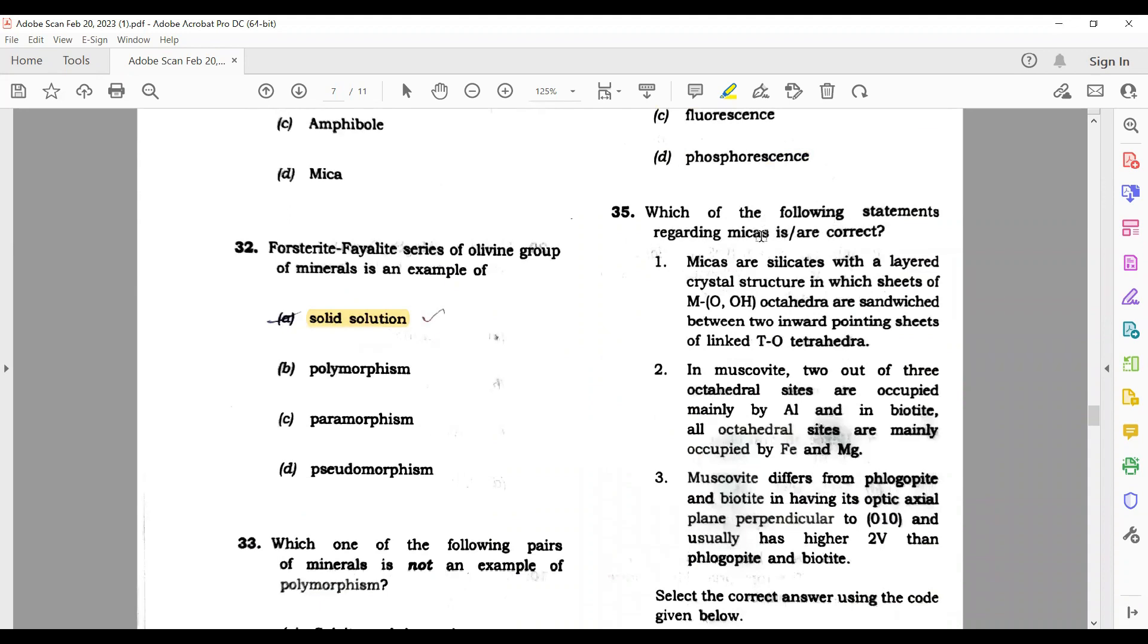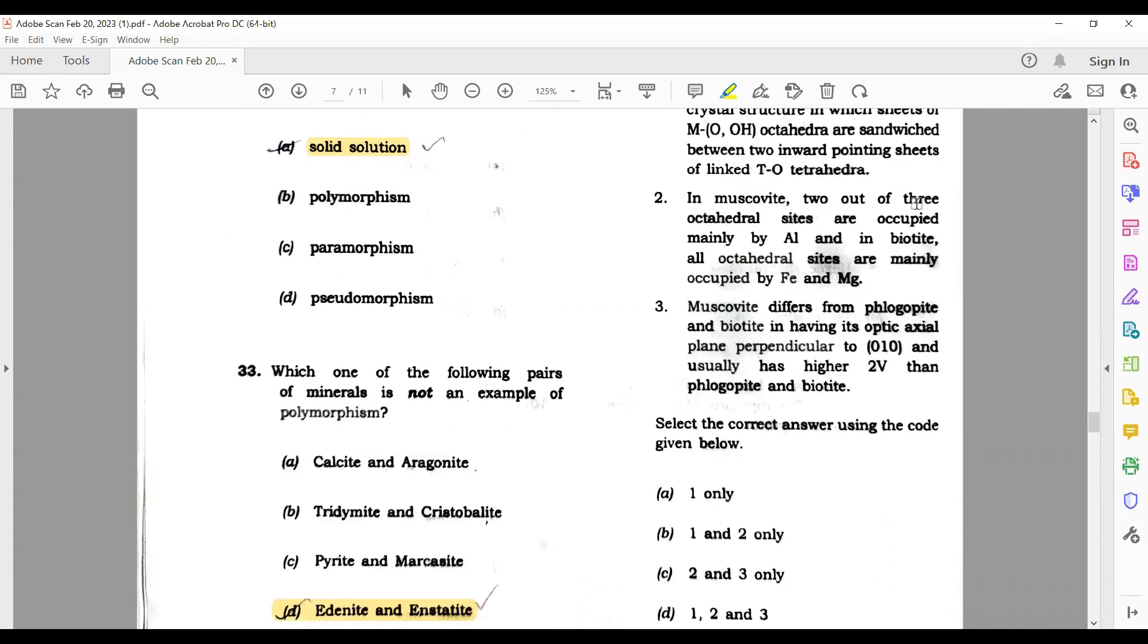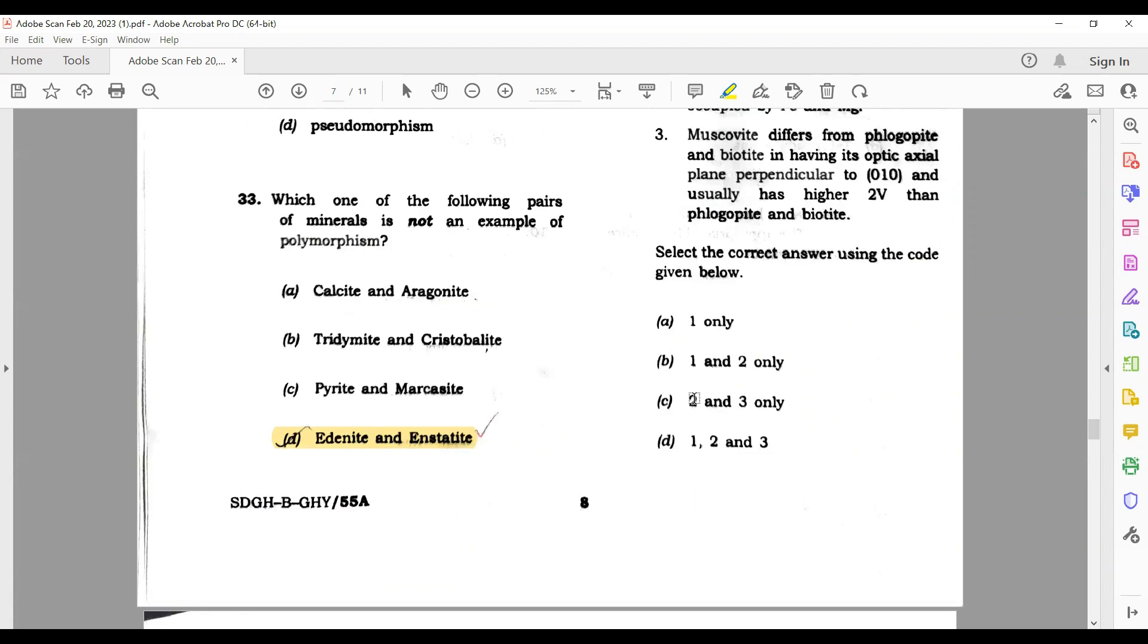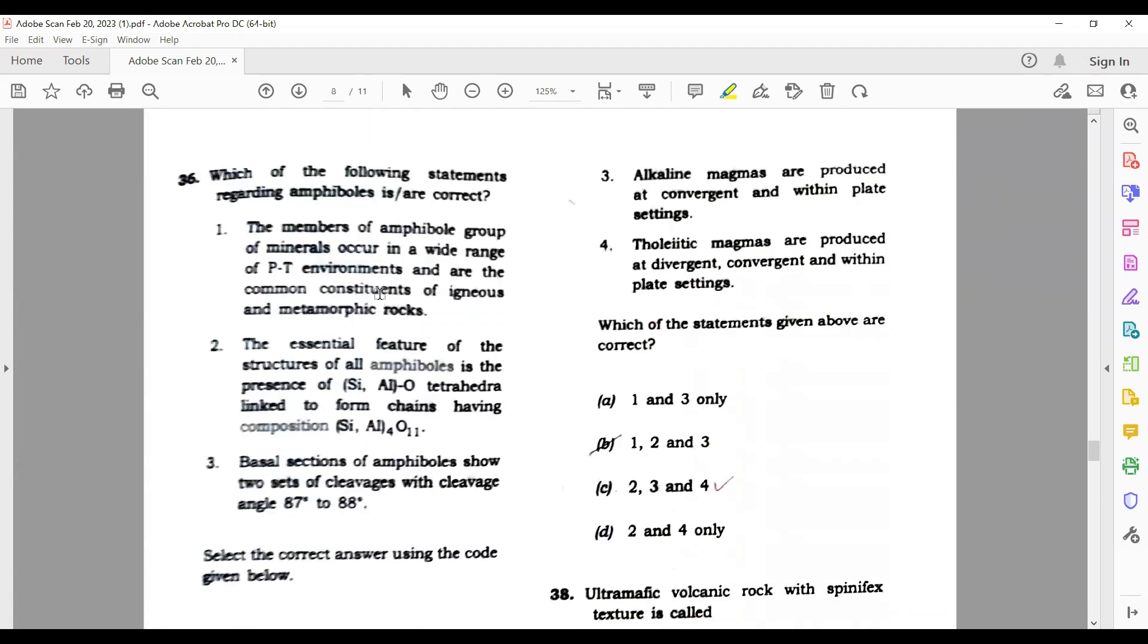Some specimens of plagioclase show spectral colors ranging from blue to green, yellow or red. The iridescence is called labradorescence. Which of the following statements regarding micas is correct? Micas are silicates with a layered crystal structure in which sheets of MOH octahedra sandwich between two inverted - this is correct. In muscovite, two out of three octahedral sites are occupied mainly by Al and in biotite octahedral sites are by Fe and Mg - again correct. Muscovite differs from phlogopite and biotite in having an optical plane difference of 0 to 1 and usually has higher 2V - again correct. So all three are correct. Correct option is 1, 2, 3.